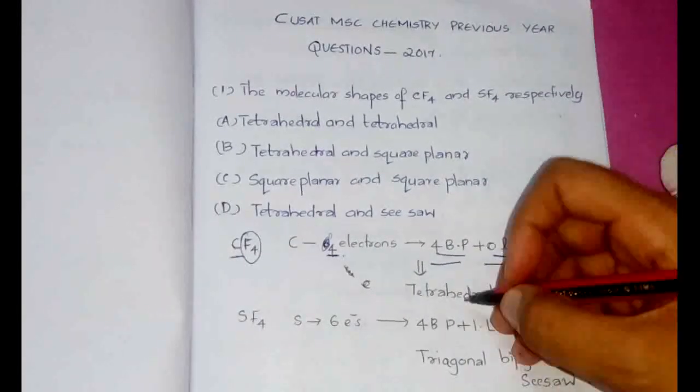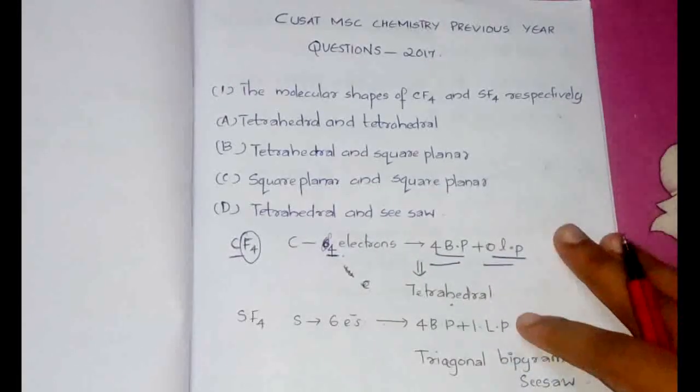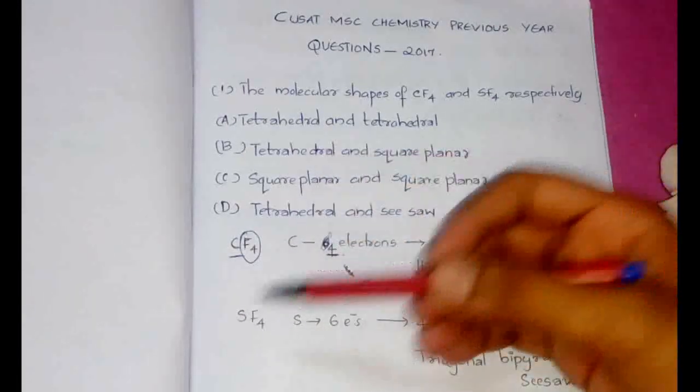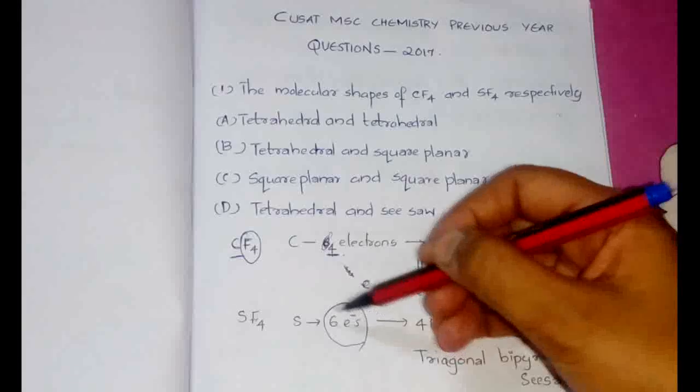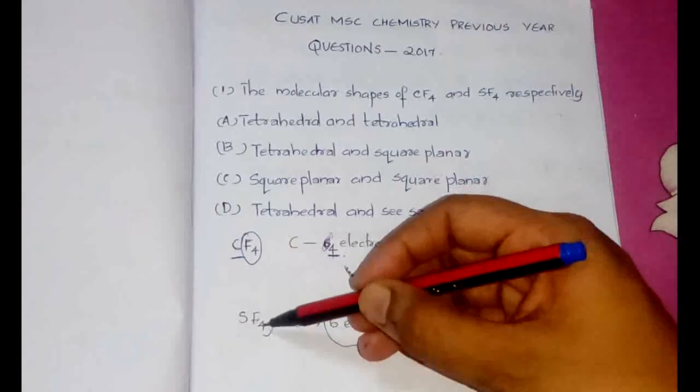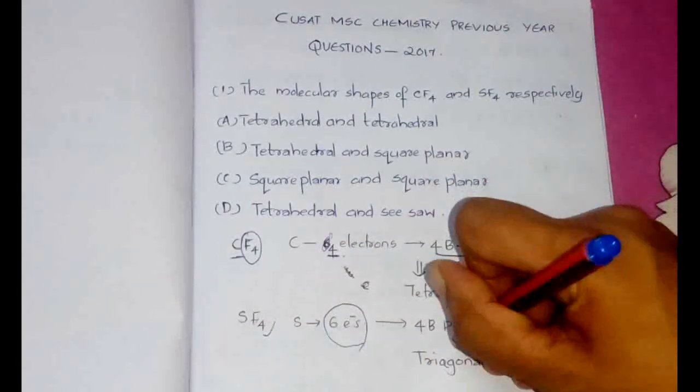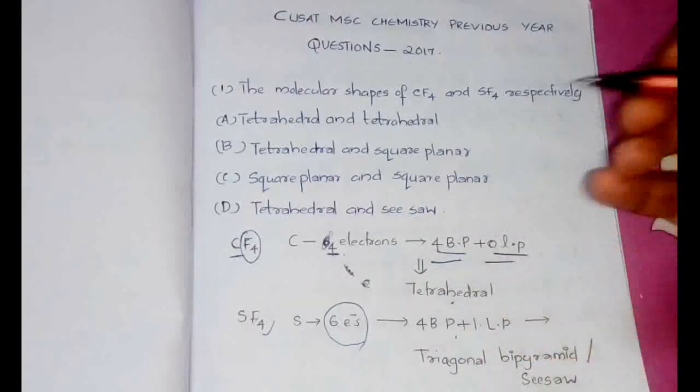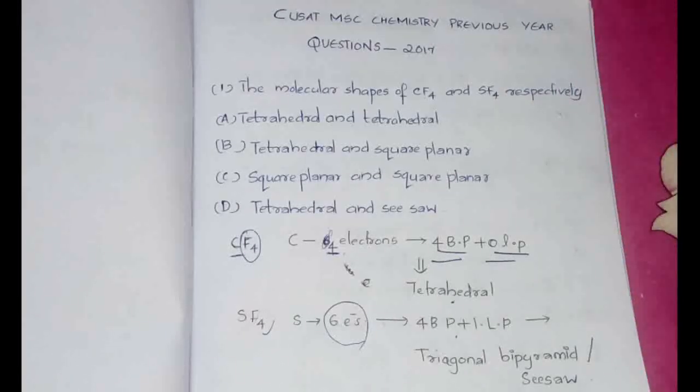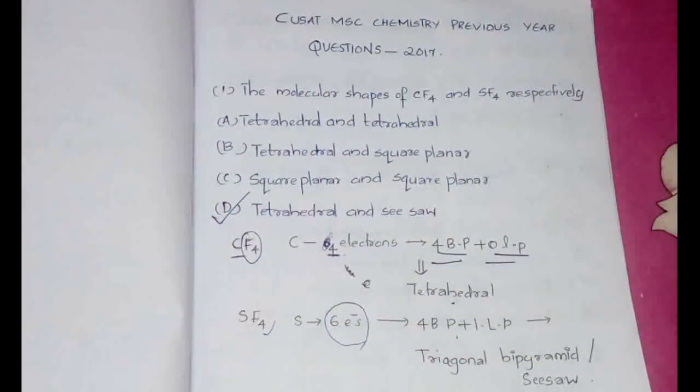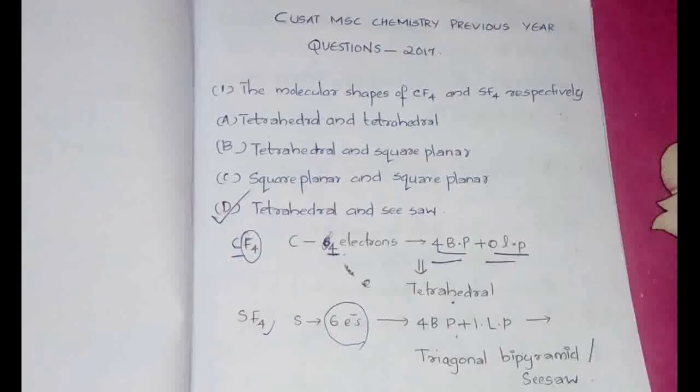There are no lone pair, and according to my video I have already told you if there are four bond pair with zero lone pair then the shape is tetrahedral. Now the same way let's see about SF4. In SF4, sulfur is having six electrons, and four of these electrons will be used to form single bond with fluorine, so four bond pair are already present, what is left? One lone pair. So according to that video we have already seen that four bond pair plus one lone pair, it can be either trigonal bipyramid or seesaw. According to the option available for you, you are supposed to make your choice. So here we have seesaw and tetrahedral, so our answer will be option D: tetrahedral and seesaw.